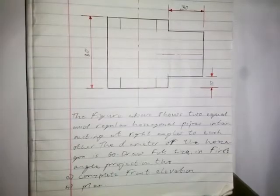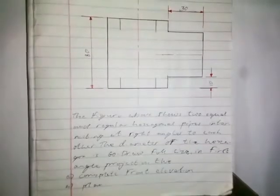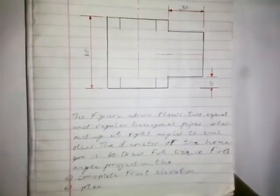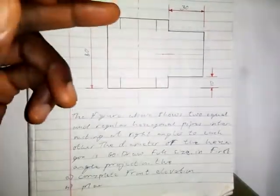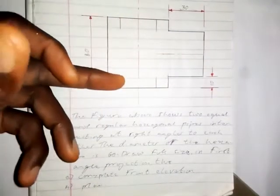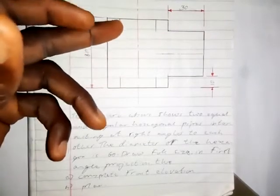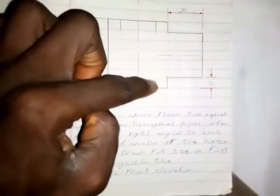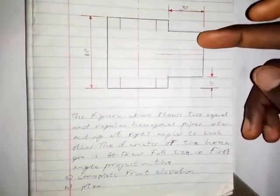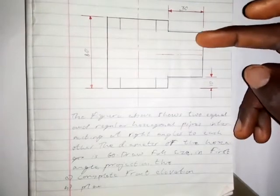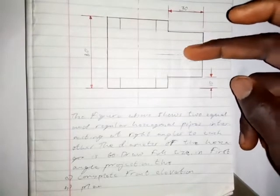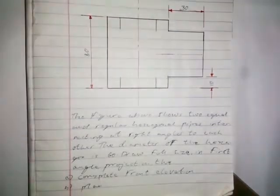Looking at this front elevation drawn in first angle projection, we are only given the front elevation, but it is not complete — these lines are supposed to join and connect together. Also, in the front elevation of the penetrating prism, we are not given the lines on this part. I'm going to show you how to do that in this video.